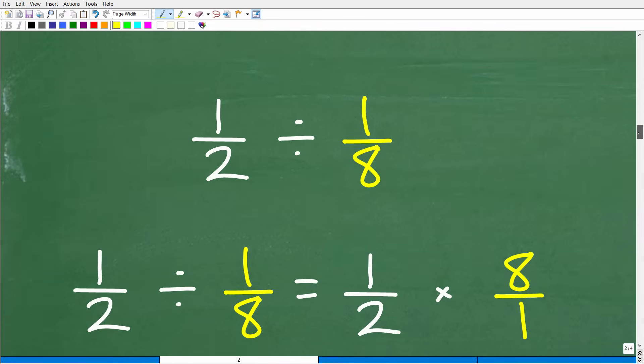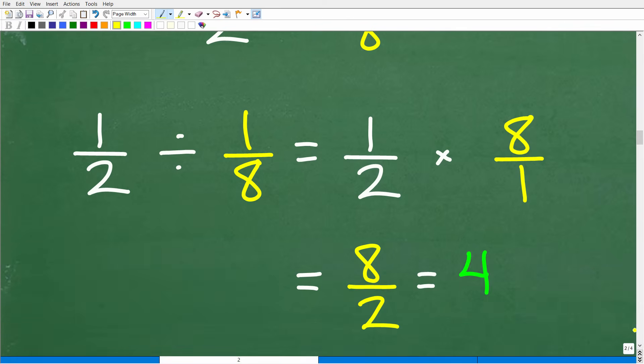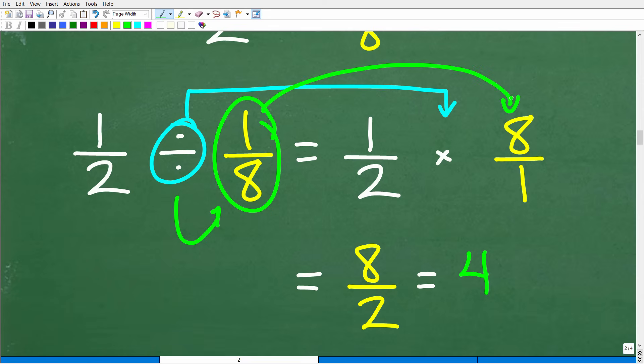This is super easy. One half divided by one eighth is equal to what? Well, we have to understand how to divide fractions. So dividing fractions is pretty straightforward. When we see a division problem and we have fractions, what we're going to do is change that to a multiplication problem. So we're going to go from division to multiplication. But the way we're going to do that is we're going to look at the fraction to the right of the division operator. In this case, it's one eighth and we're going to flip it upside down.